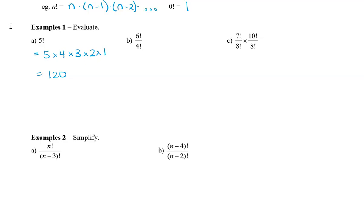We could type six factorial divided by four factorial, but we can also do some simplifying. Six factorial can be rewritten as six times five times four factorial. Since the denominator is also four factorial, the four factorials cancel, and we're left with six times five, which is 30.